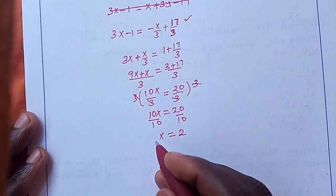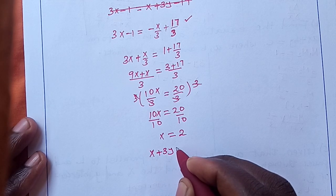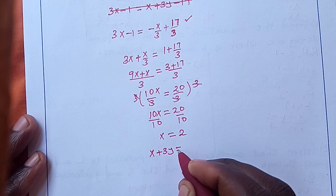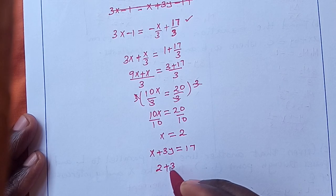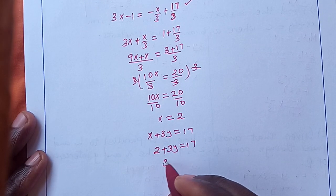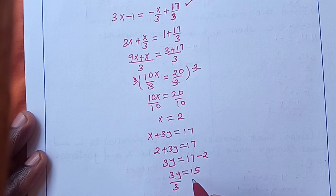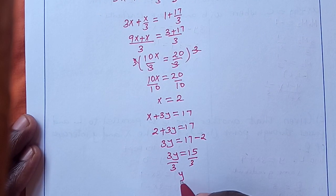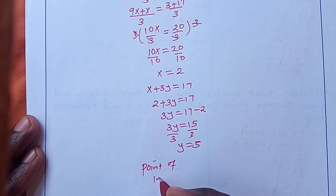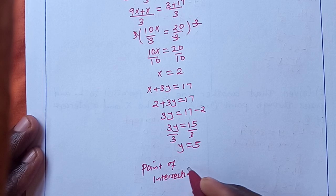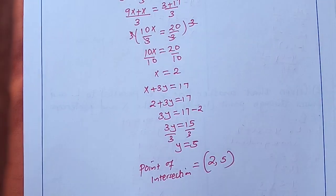Now that we have x, we go back to the equation x + 3y = 17. Where we see x, we replace with 2: 2 + 3y = 17. So 3y = 17 - 2 = 15, giving y = 5. The point of intersection is (2, 5). This is the point where the two lines meet.